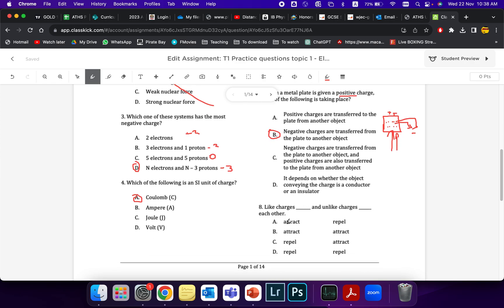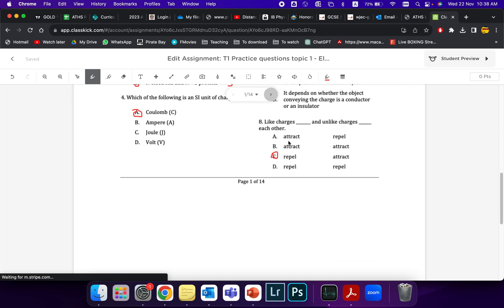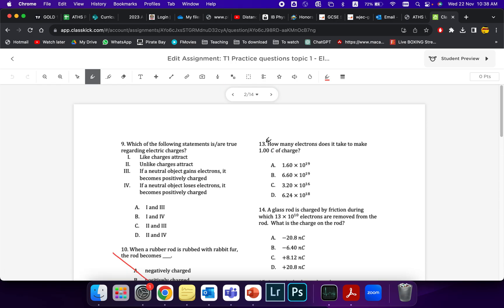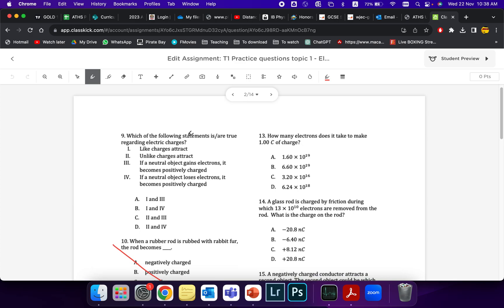Like charges repel and unlike charges attract. Over here, which the following is true? Unlike charges attract. Neutral object gains electrons, it should be negatively charged. If it loses, it becomes positive. So that is correct. So out of this, we have 2 and 4.